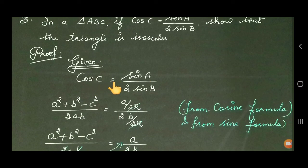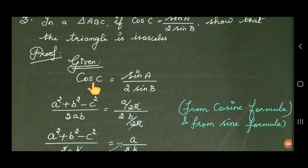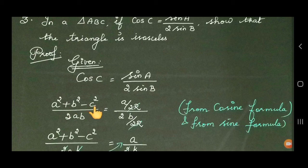What is given? Cos C is equal to sin A divided by 2 sin B. On the left hand side, we are going to use the cosine formula. Cos C is equal to A square plus B square minus C square, divided by 2AB. On the right side, we have sin A divided by 2 sin B.